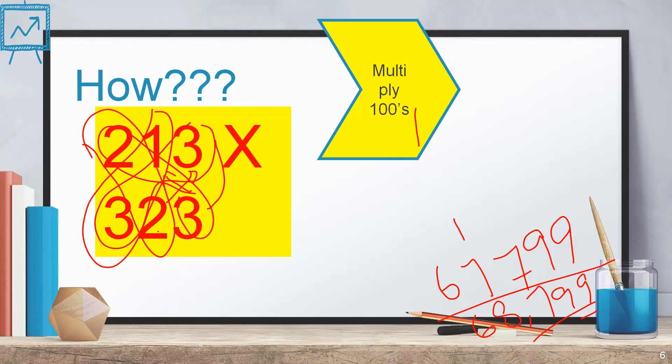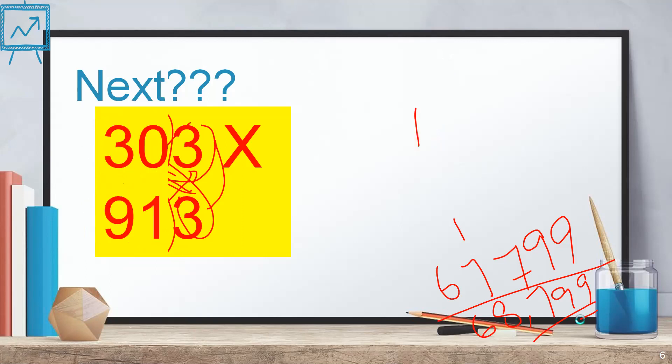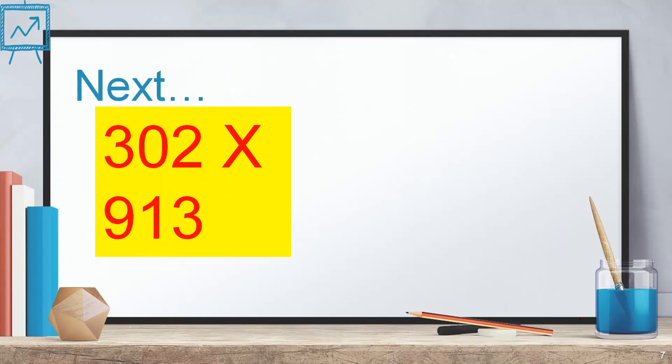Even though we have taken a bit of extra time explaining the steps, when you do more numbers, more practice, you will also be learning or acquiring more speed. I will show you one more example. 302 multiplied with 913.